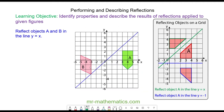Now we're going to reflect objects A and B in the line y is equal to x. We have a vertex on object A and it is one unit away. It hits the mirror line at a perpendicular angle and passes through the mirror line to the same distance.